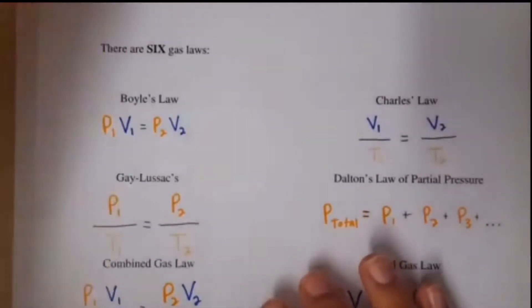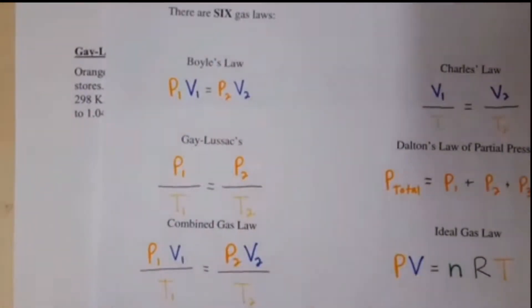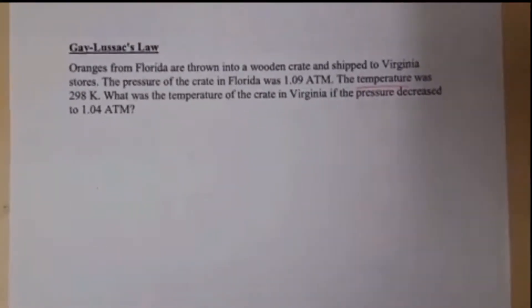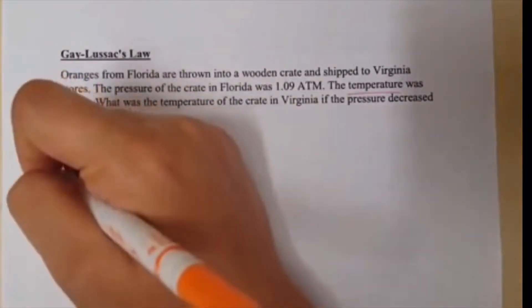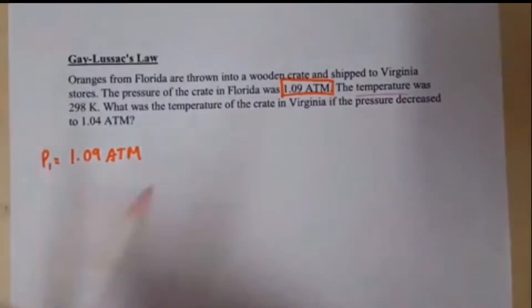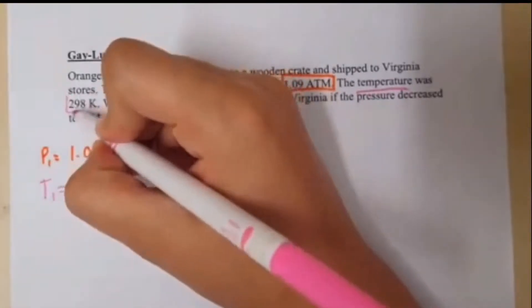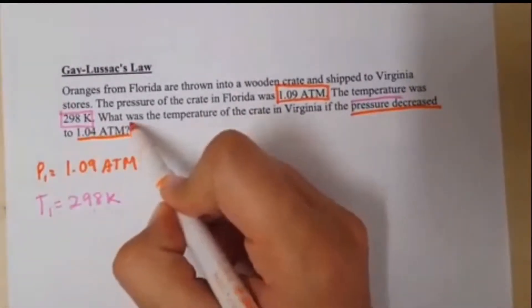The next law is Gay-Lussac's law. This law has to do with pressure and temperature. There is a direct relationship between these two variables — as pressure increases, temperature increases, and as pressure decreases, temperature also decreases. Oranges from Florida are thrown into a wooden crate and shipped to Virginia stores. The pressure of the crate in Florida was 1.09 atm. The temperature was 298 Kelvin. What was the temperature of the crate in Virginia if the pressure decreased to 1.04 atm? So our givens: initial pressure was 1.09 atm, initial temperature was 298 Kelvin. Because this is already in the SI unit, there is no need for a conversion. The pressure decreased to 1.04 atm — that is our final pressure.